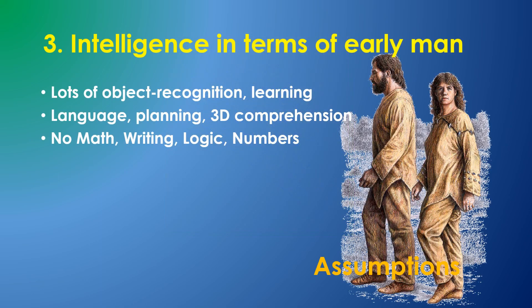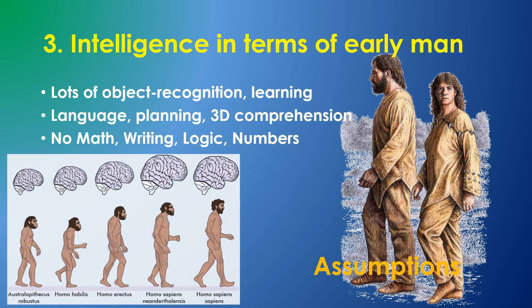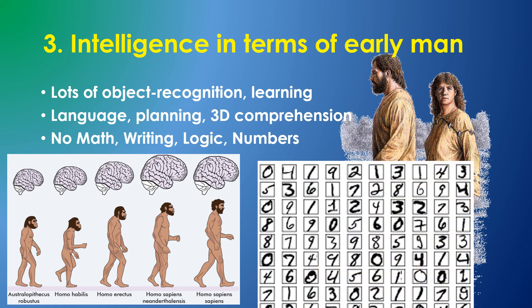Assumption 3: I think of AGI in terms of primitive man. Human brains haven't changed structurally in thousands of years, and I focus on our vast ability to learn, plan, and act in three dimensions. Mathematics, logic, numbers, writing, etc. are recent learned developments and are not inherent in the human mind or intelligence. Early man had a great ability at recognizing objects, he had language, he could find his way through a significant area of wilderness, but his brain had the capacity for learning how to write, add, or play chess without any specialized modification.